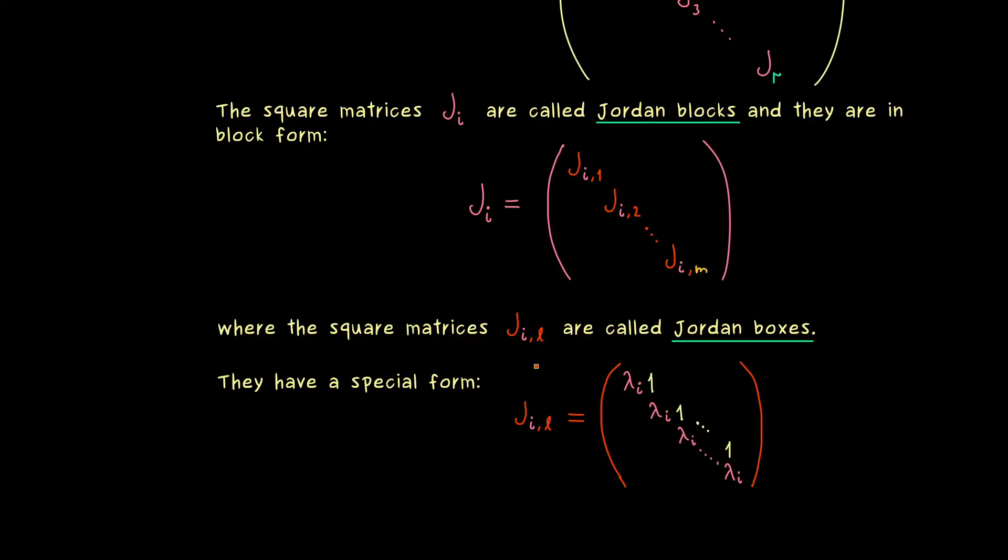So this implies that a big Jordan Normal Form has mostly zeros as entries. And moreover in the end it will consist of a lot of Jordan boxes in a row.